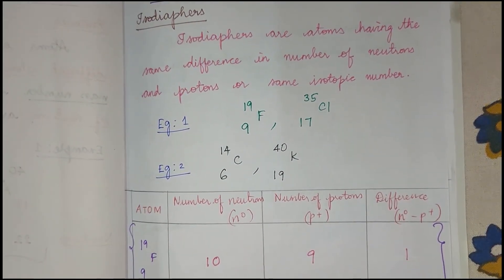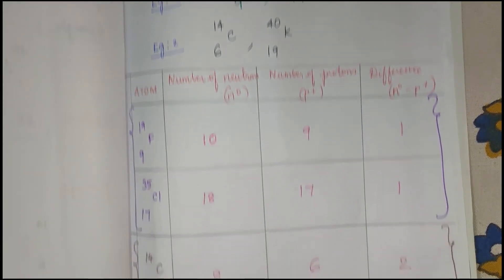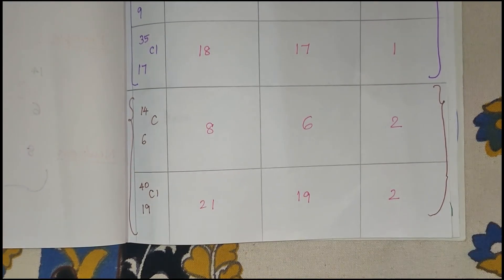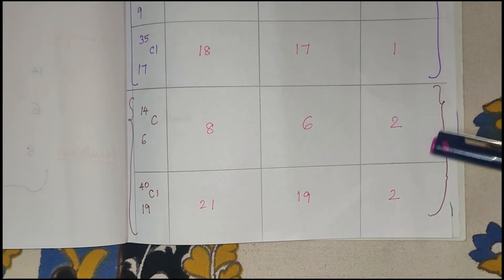What do we do to identify iso-diaphors? We take the number of neutrons and subtract the number of protons. If the two subtractions give the same result, they are iso-diaphors.